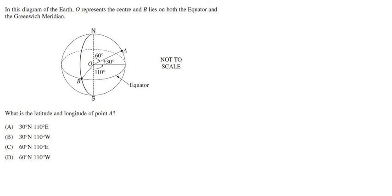Next question. In this diagram, the Earth O represents the center, and B lies on the equator and the Greenwich meridian. That's our zero degrees line, our point of origin. What is the latitude and longitude of point A? We always look at the latitude first, that's our north or south. If I follow it around to the line, we're going up to A, which means we're going up 30 degrees, which means that latitude line is 30 degrees north. So automatically C and D are gone.